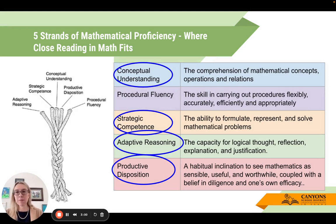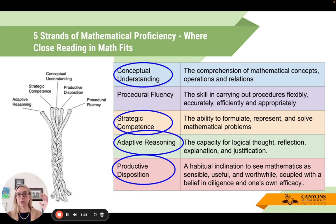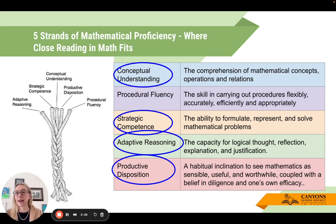Next I want to talk about the five strands of mathematical proficiency. If you're familiar with Scarborough's rope from literacy work, math also has one, established in 2001. What I tried to do for today was look at where the close reading routine in math and mathematical discourse fit into the strands. I think it really hits on all five, though four seem very explicit - procedural fluency you'd have to build in purposefully.